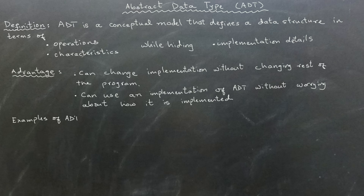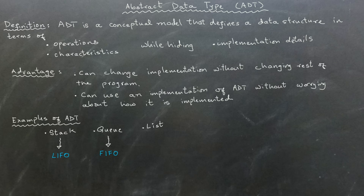Examples of key abstract data types are Stack, Queue, and List. No matter what implementation we use for a stack, we know it will always follow a last-in, first-out principle. Similarly, a queue can be implemented in different ways, but it will always follow a first-in, first-out order.